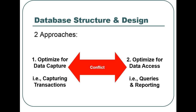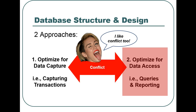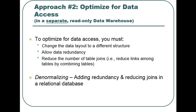As you will recall from an earlier slide, there are two fundamental designs for relational databases. We will now discuss the second design: optimizing a database for data access. Data access is typically done by using queries, reports, multidimensional cubes, dashboards, and data mining. To optimize a database for data access, we add redundancy back into the database by combining tables and therefore reducing the number of table joins.